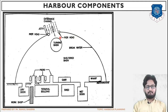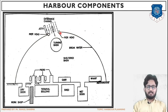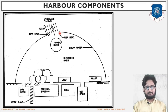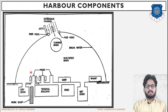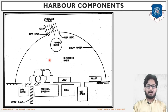Next is the pier head, which is in connection with the breakwater. As we can see, on the periphery is the breakwater. The pier head is connected with the breakwater, and on it navigational aids can be mounted. We will be studying about navigational aids in detail in upcoming sessions. Next, the most important component is the breakwater, which is on the circumference or periphery. It dissipates the wave energy or wind energy and ensures that the area inside remains calm so that harbour operations can be carried out safely.